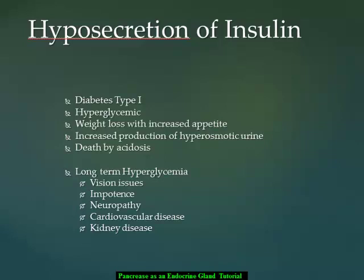Long-term hyperglycemia related to hyposecretion of insulin causes many complications seen in diabetic patients. Vision and hearing are affected due to loss of blood vessels to the eye and neuropathy. Individuals with long-term hyperglycemia may experience impotence and erectile dysfunction. Chronic hyperglycemia also causes neuropathy, death of nerve cells, and damage to the cardiovascular system through irritation of blood vessels and potential heart damage. Elevated blood pressure combined with the kidney's extra work to clear excess glucose can lead to kidney disease.